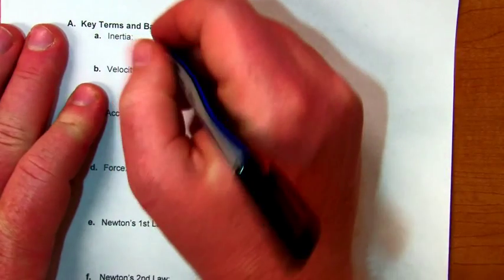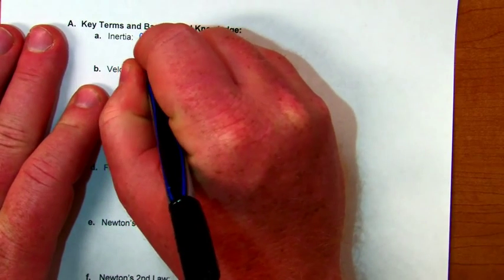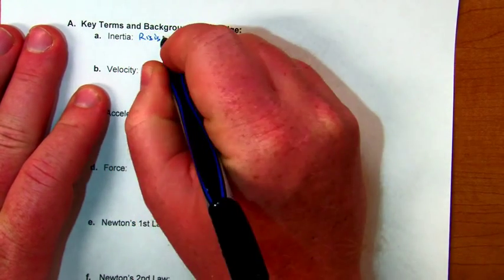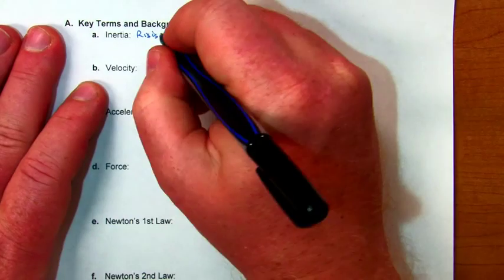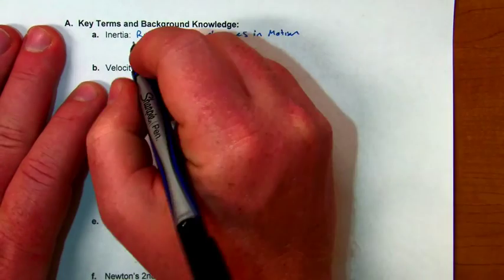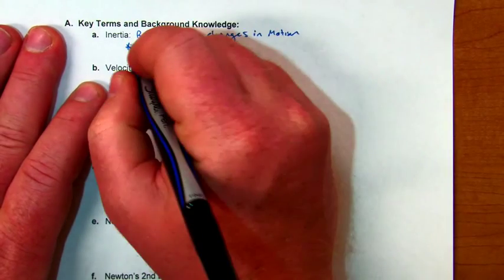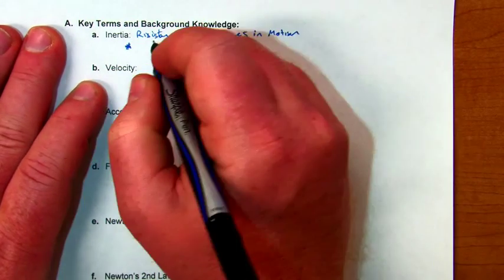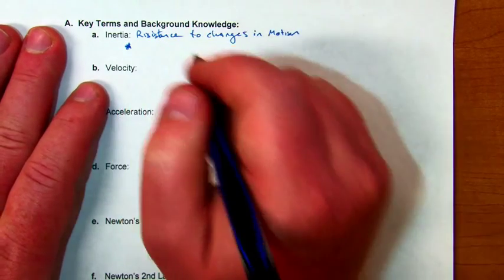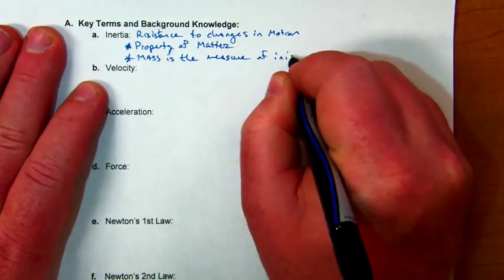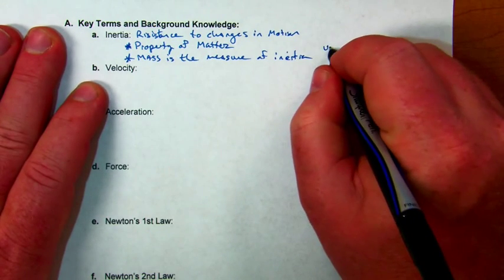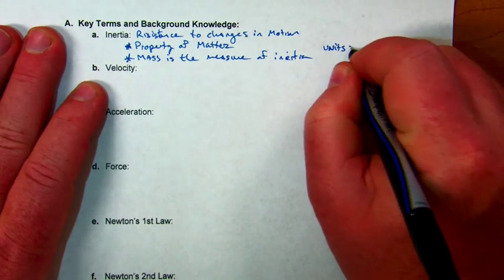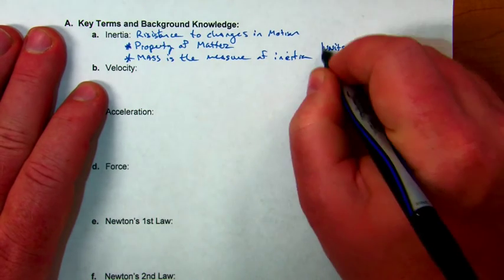Inertia is simply resistance to changes in motion. This is a property of matter, so everything with mass has inertia, and you can think of mass as the measure of inertia. The units, if you want to give inertia units, would be kilograms—the SI unit of inertia.